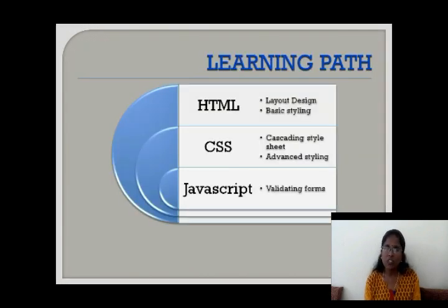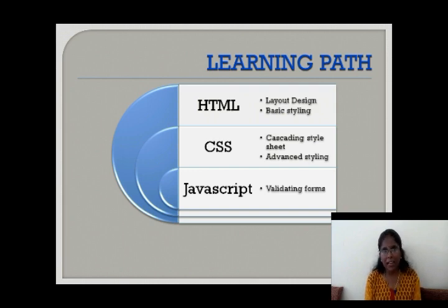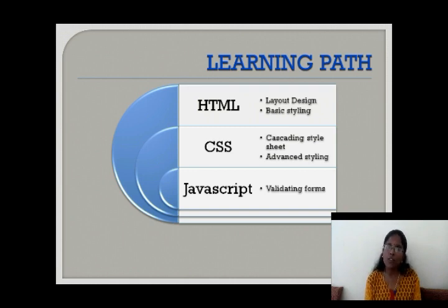Once the designing is done, they move on to the next stage which is called JavaScript. In the JavaScript phase, we are going to give validation to the forms and other features which we need to validate in the website. For example, in Gmail or Yahoo or any website, whenever we try to enter a login, we get error messages if we enter an incorrect username or password. Those error messages are done by validation, and that validation is done using the language called JavaScript. So using JavaScript, we are going to validate our designed application. Once the validation is done, we move on to the next stage, which is called the programming stage — this is where we move into development.